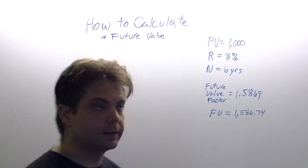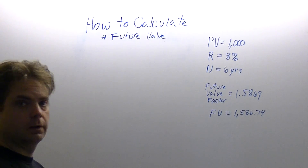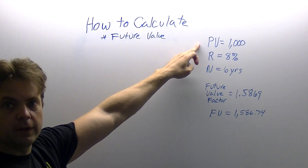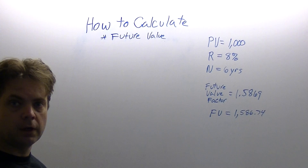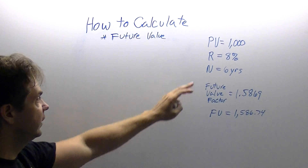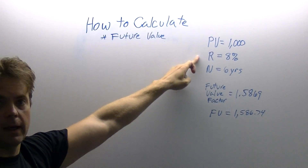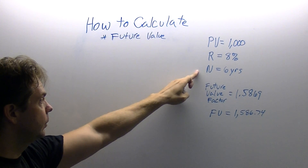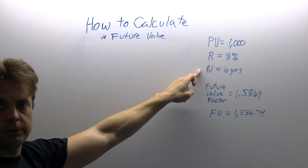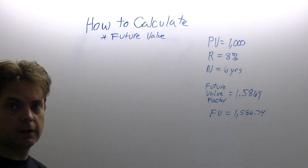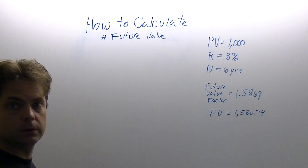In this example, we are going to use a value of $1,000 which we have today. We are going to invest that $1,000 at an 8% interest rate and we are going to continue to invest it for 6 years. The formula for the future value is: